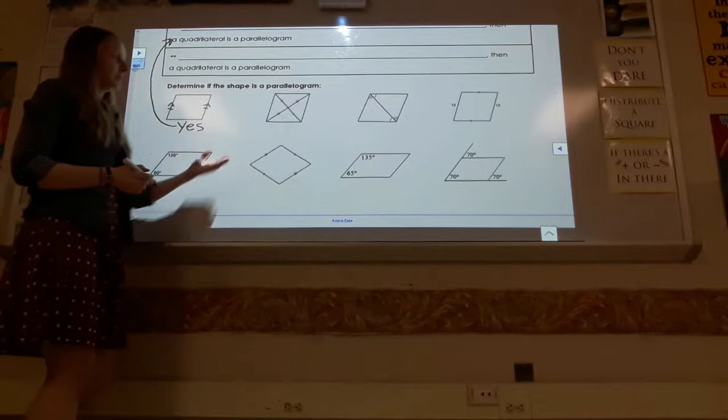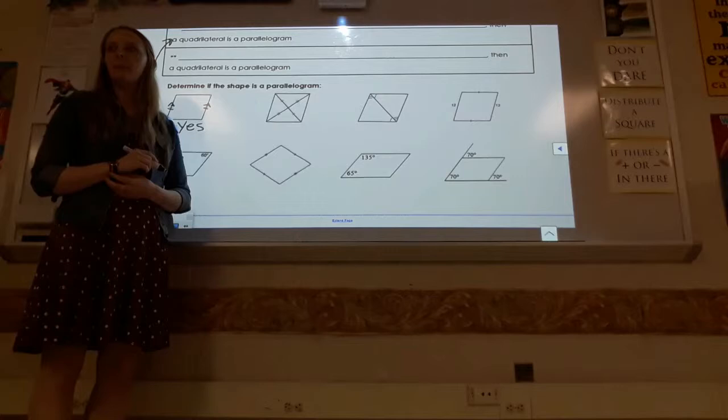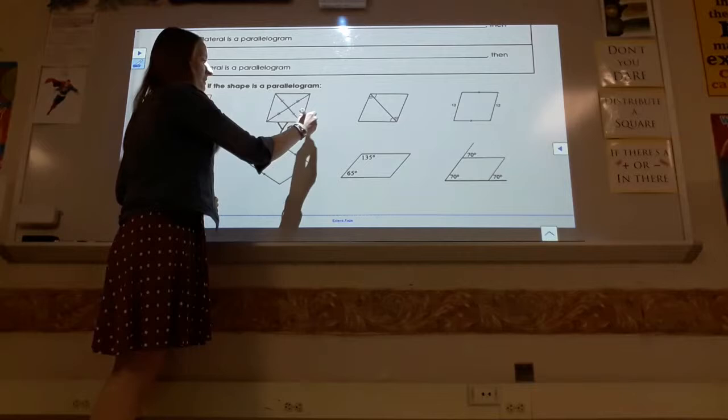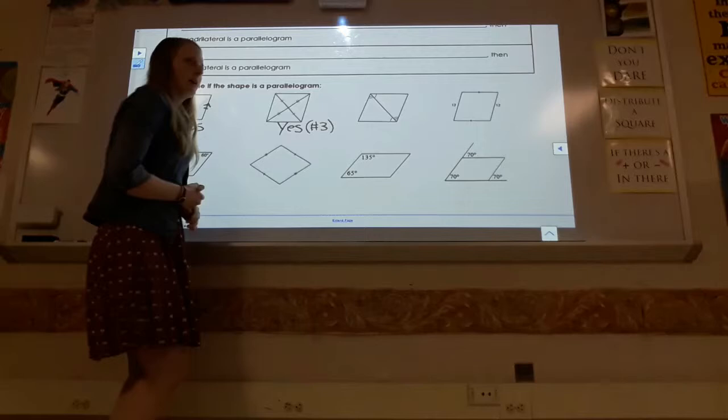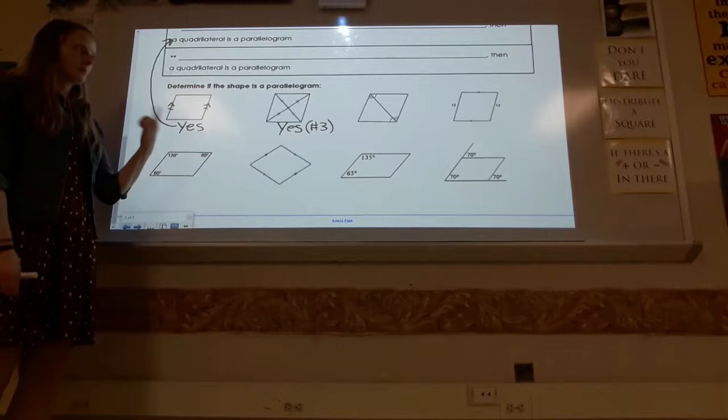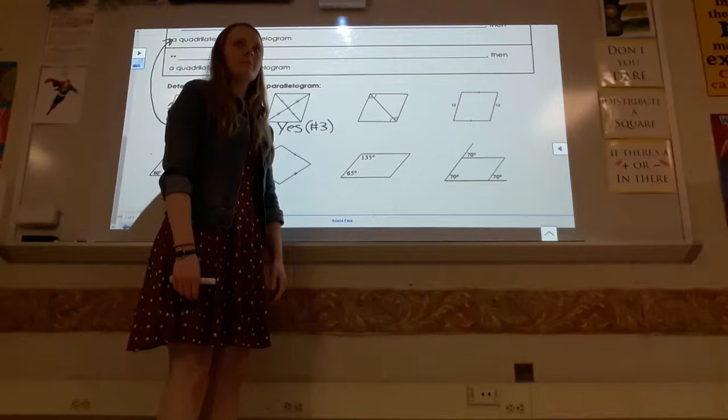What about the second shape? The two diagonals don't just intersect — they bisect each other. That's property three. So yes, this is a parallelogram, using the backwards direction of that biconditional. When defending your answer, reference the specific property you're using.